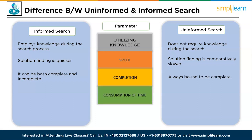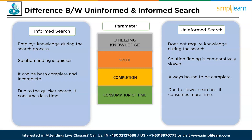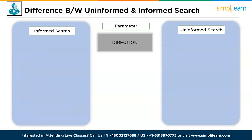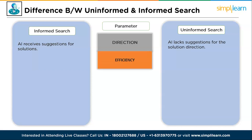The fourth parameter is time consumption: informed search consumes less time due to quicker search, while uninformed search consumes more time due to slower searches. The fifth is cost: in informed search expenses are much lower, while uninformed search expenses are comparatively higher. The sixth is direction: AI receives suggestions for solution direction in informed search, while in uninformed search AI lacks suggestions for solution direction. The seventh is efficiency: informed search costs less and generates quicker results, while uninformed search costs more and generates slower results.